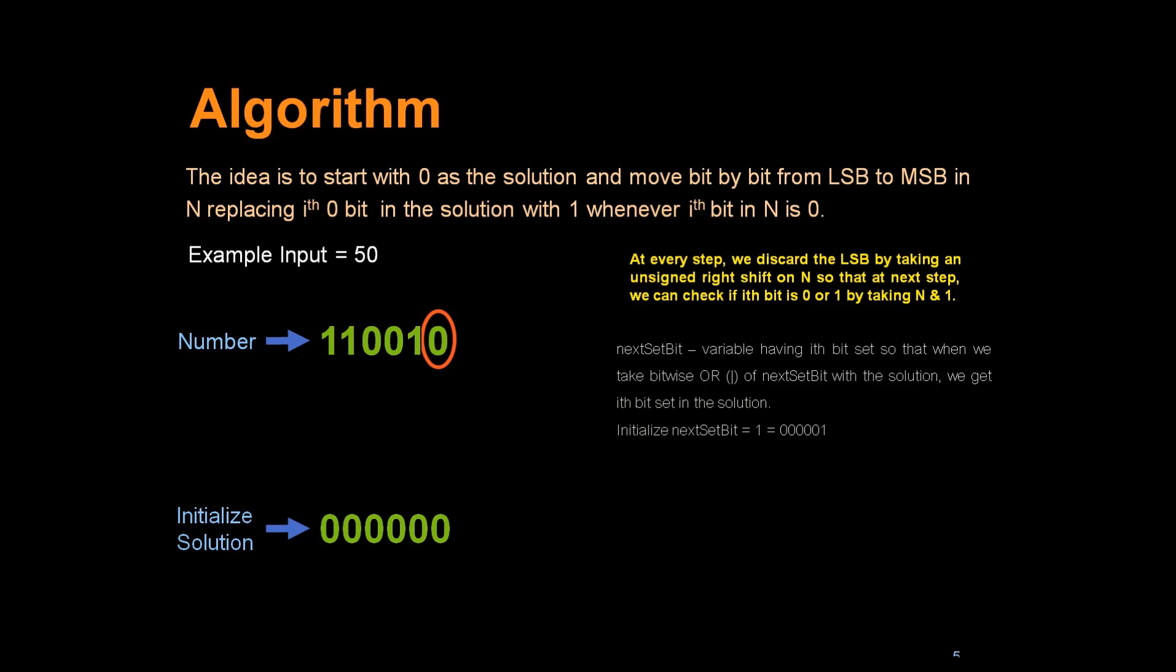Let's start. The current bit is 0. First we will check whether it is 0. Yes, it is 0. And how did we check that? We checked it by doing N and 1. So this is 0. We will take bitwise OR of solution and next set bit.